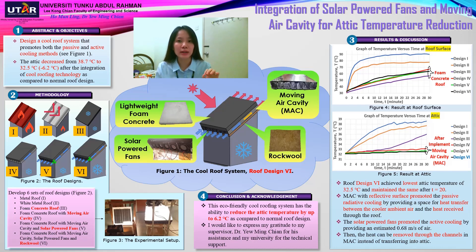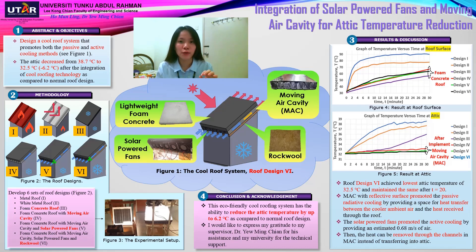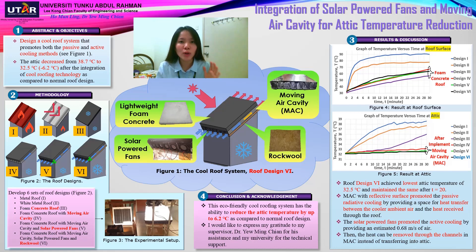For the results and discussion, the results were divided into temperature versus time variation at roof surface and attic. At the roof surface, the use of foam concrete roof shows that the temperature line graphs of roof designs 3 to 6 from the metal roof show a maximum decrease of 37.6% due to its lower thermal conductivity. Foam concrete roof can conduct the heat slower than metal roof.